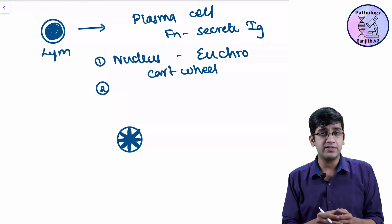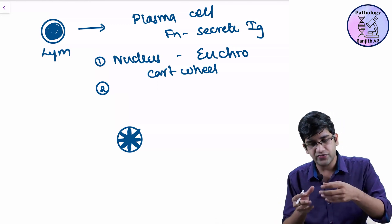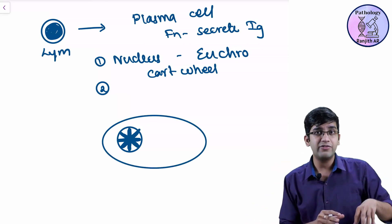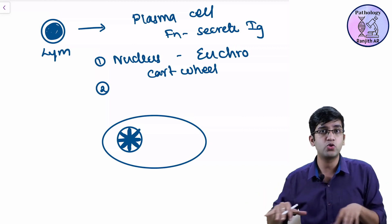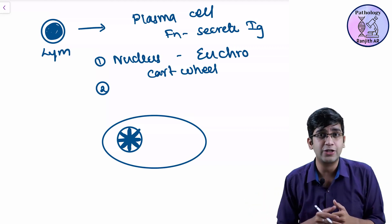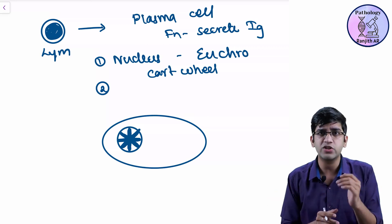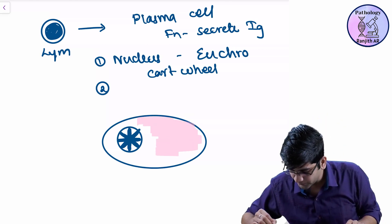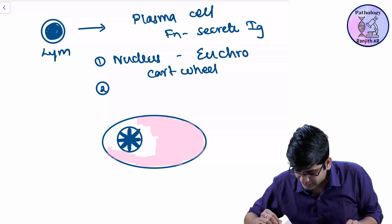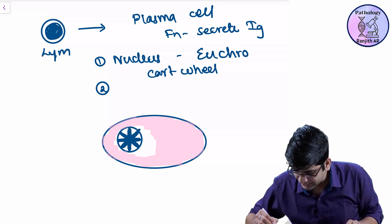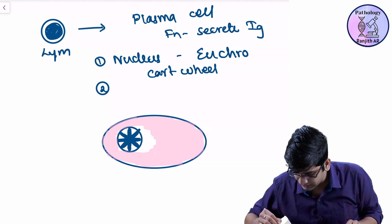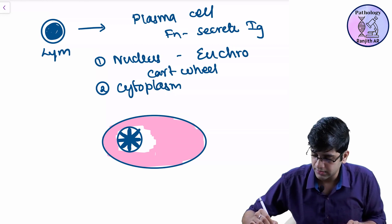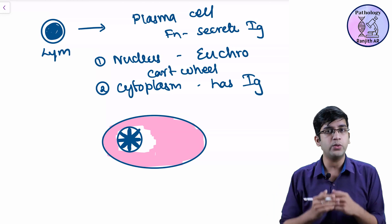Then it is going to secrete immunoglobulins. When they secrete substances, it will accumulate and release whenever it's needed. So my cytoplasm becomes big. My plasma cell will be eccentric nucleus. All the immunoglobulin will be stored in the cytoplasm. If my immunoglobulin is stored in the cytoplasm, what is the color of a protein? Immunoglobulin is a protein. What is the color of protein? Pink. So my cytoplasm is going to become pink in color. My cytoplasm becomes pink in color because my cytoplasm has immunoglobulin which is a protein which will be pink in color.